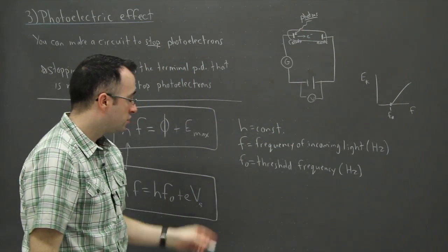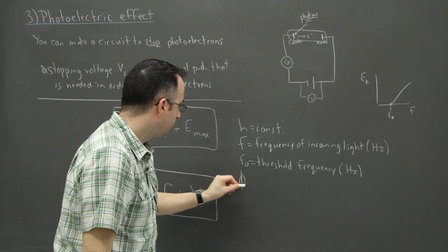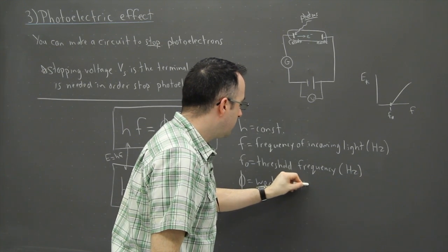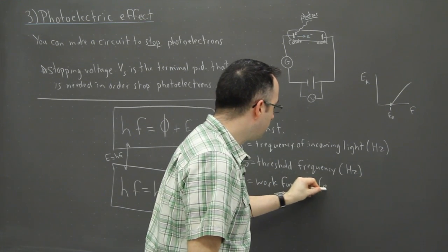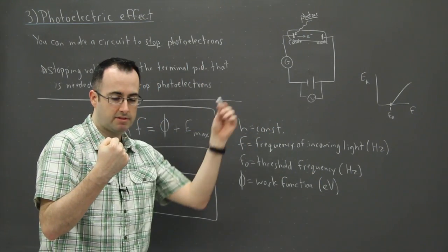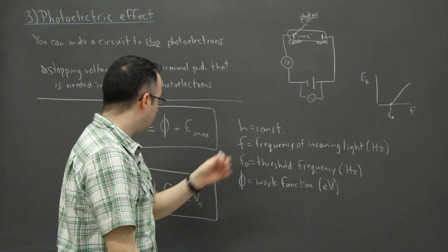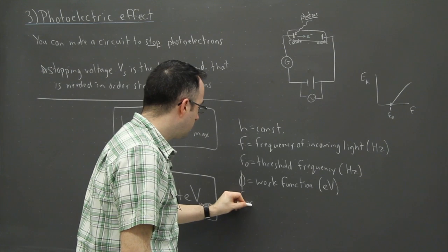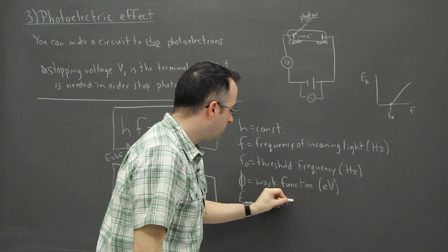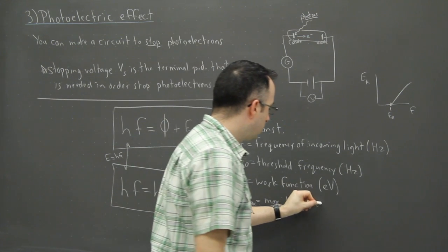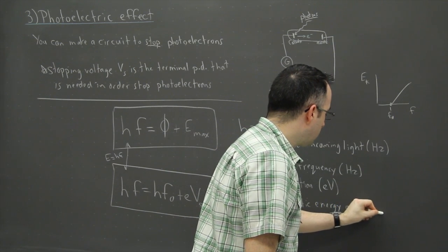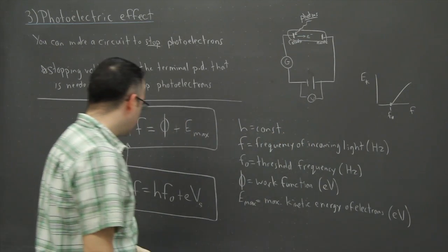So we put in that that's F_0. Now we have Φ which is the work function. Remember that's the amount of energy needed in order to kick out an electron, and that's because the metal is actually holding on to that electron so you have to have the photon come in with enough energy to throw it out. E_max, that is just the maximum kinetic energy of the electrons, in other words the kicked out photoelectrons, that's their maximum energy and that's measured in electron volts.